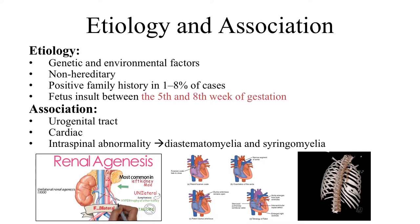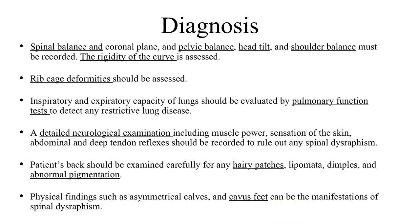Associated anomalies: the most common is congenital urinary tract anomalies, notably renal agenesis — that's why you should do an abdominal ultrasound before surgery. Cardiac anomalies are common as well and an echocardiogram is a must. Intraspinal anomalies are associated with congenital vertebral malformations in 30 percent of cases, and we need to do an MRI before surgery to rule out these abnormalities.